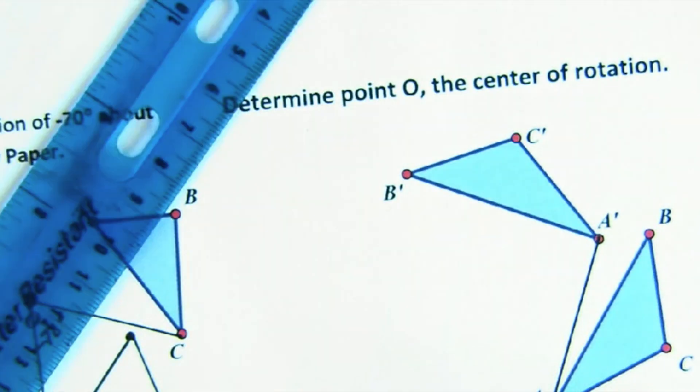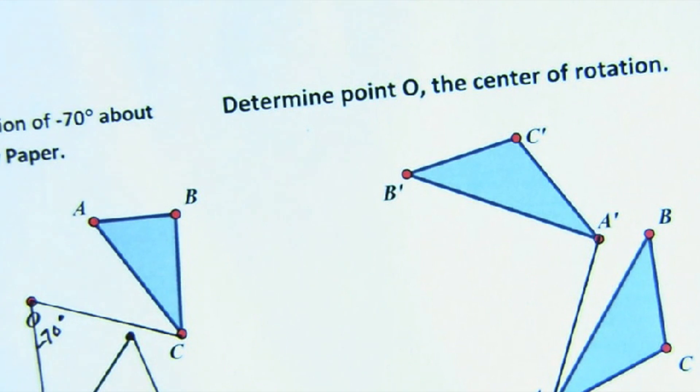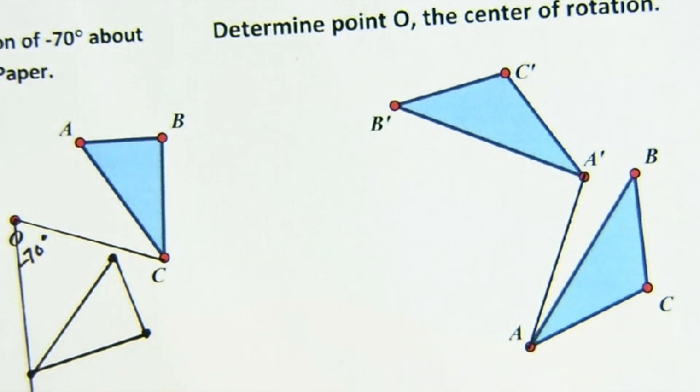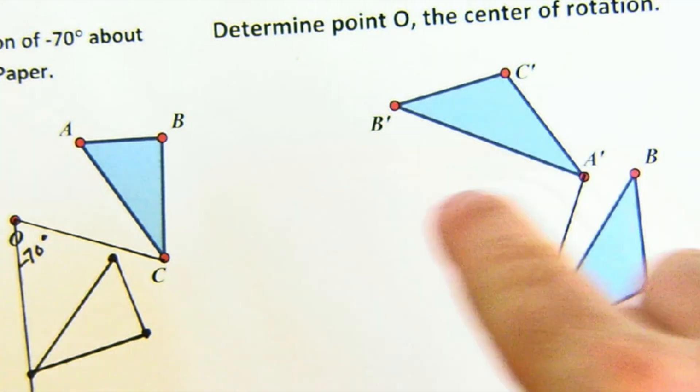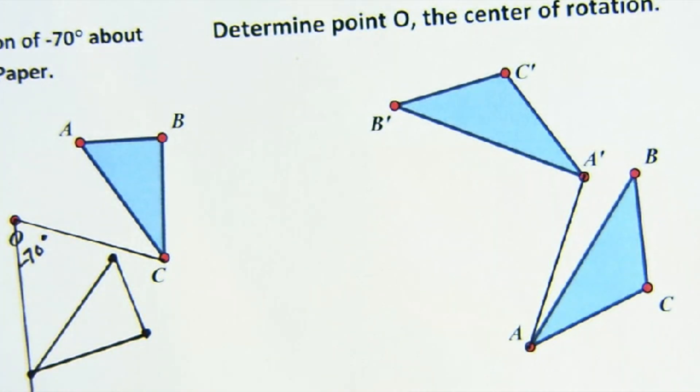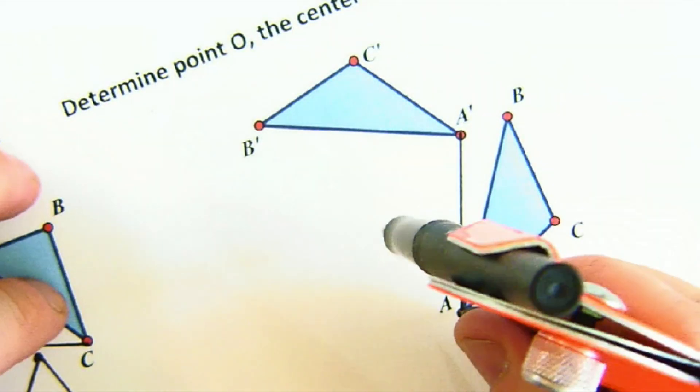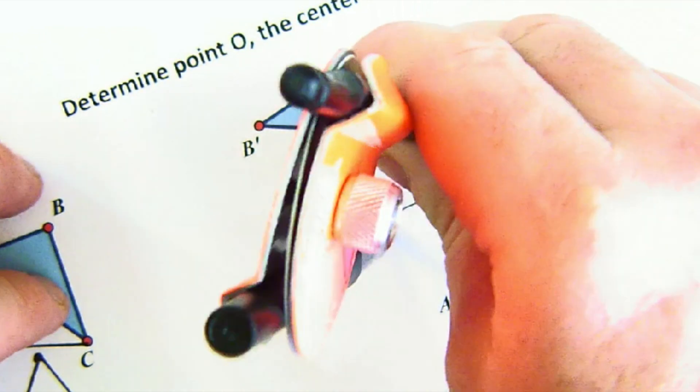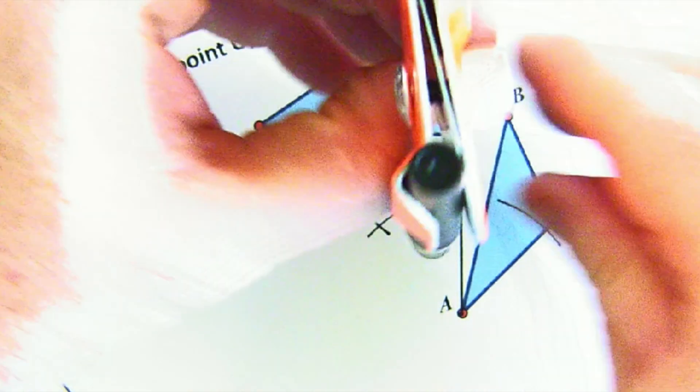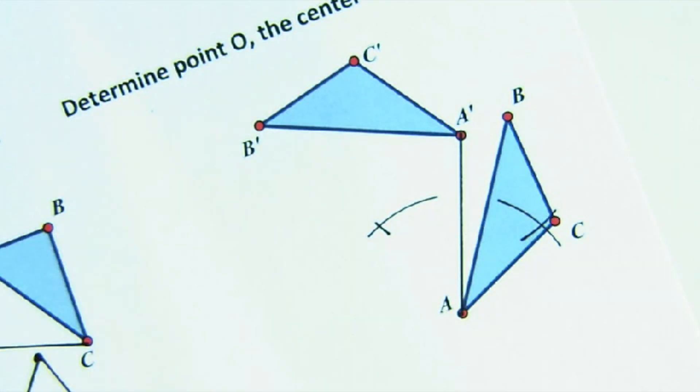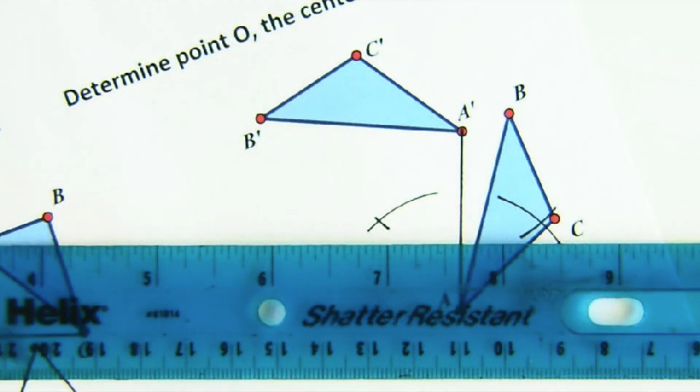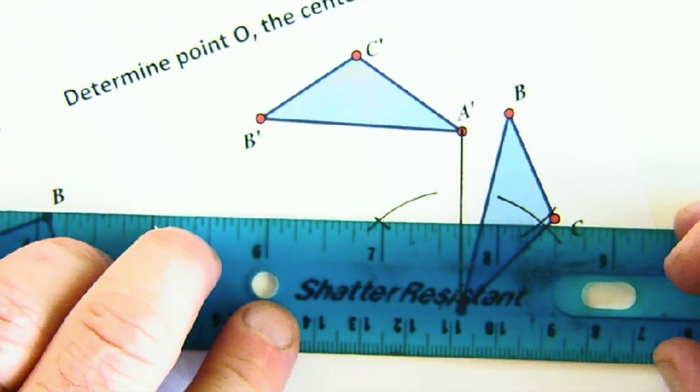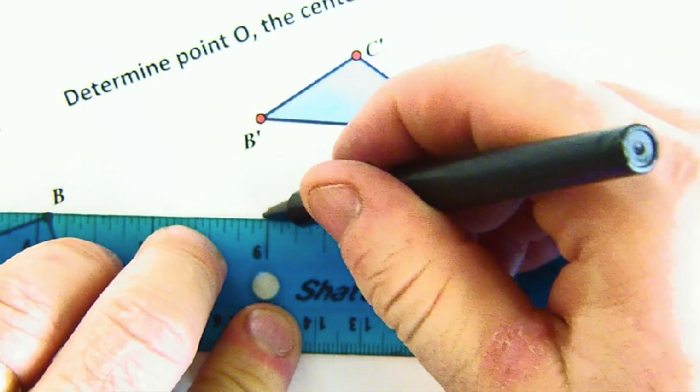So I'm going to connect A and A prime. Those two have to move along the edge of a circle. And so the center of that circle has got to be the same distance from A as well as from A prime. And so we're going to do a perpendicular bisector. So again, this is the same as our midpoint construction. I'm going to create a perpendicular bisector. Now this line represents all points that are the same distance from A and A prime, which is important.